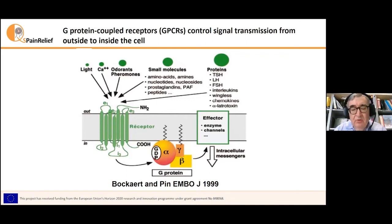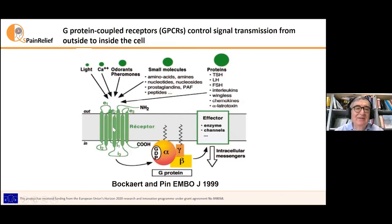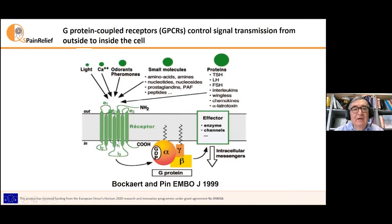From a structural point of view, these receptors are composed of seven helices. Here you see the receptor, the seven helices. It's not a planar construction in reality — here it's just a representation. It's like a cylinder inserted into the membrane. Here is the membrane of the cell. This is the extracellular side of the cell, where the ligands come and bind the receptor. And on the intracellular side, inside the cell, the G-protein binds the receptor after receptor activation by the ligands.